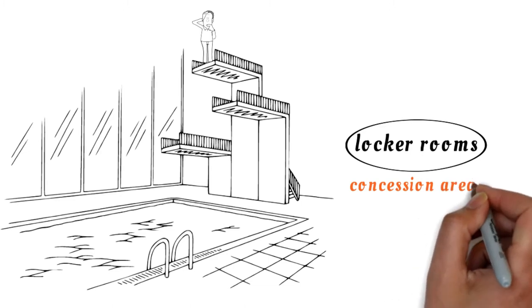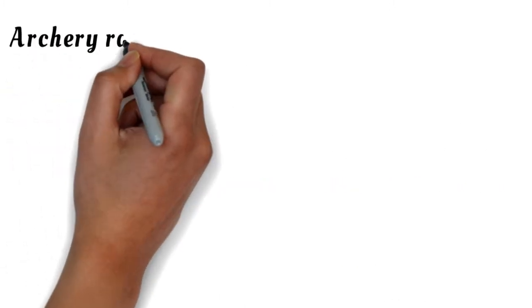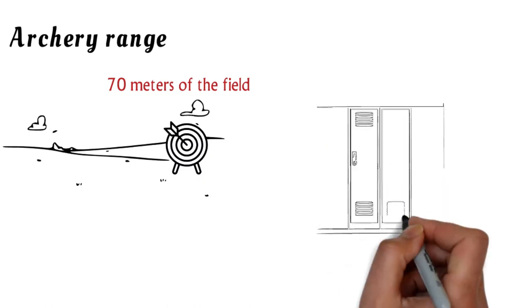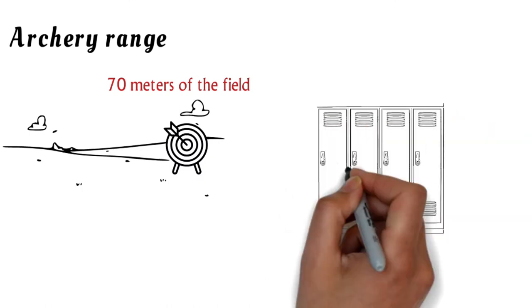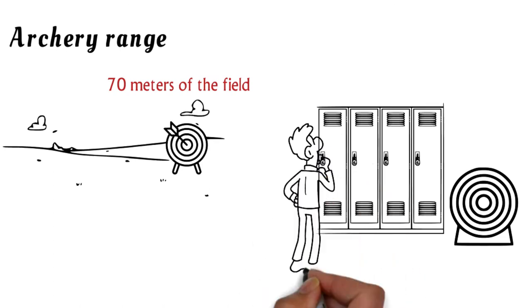When you check the archery range, you'll have to inspect all 70 meters of the field. You'll also need to check the storage rooms where they keep the targets and extra equipment. Thankfully, the range is pretty open and there aren't many places a giant torch could hide, but it's better to be safe than sorry.